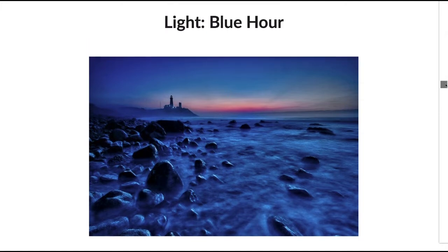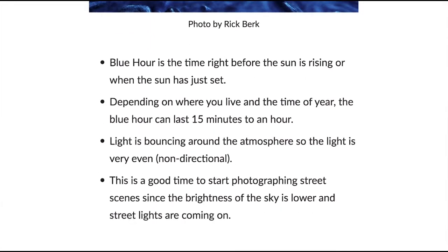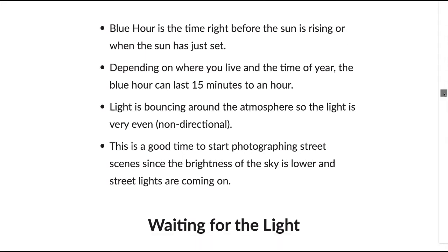The blue hour is the time right before the sun rises or just after it sets. Depending on where you live, the blue hour can last 15 minutes to an hour. During this time, light bounces around the atmosphere so it is very even and non-directional — we're not getting super hard shadows. The blue hour is also a great time to photograph street scenes because the sky's brightness is lower and street lights are coming on, balancing out the contrast.